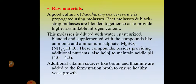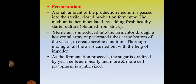What are the raw materials used? A good culture of Saccharomyces cerevisiae is propagated using molasses. Beet molasses and blackstrap molasses are blended together to provide higher assimilable nitrogen content. This molasses is first diluted with water, pasteurized, and supplemented with compounds like ammonia, ammonium sulfate, magnesium sulfate, and diammonium hydrogen phosphate. These supplementary compounds, besides providing additional nutrients, also help to maintain an acidic pH in the range of 4 to 4.5. Additional vitamin sources like biotin and thiamine are also added to the fermentation broth for healthy growth of yeast cells.